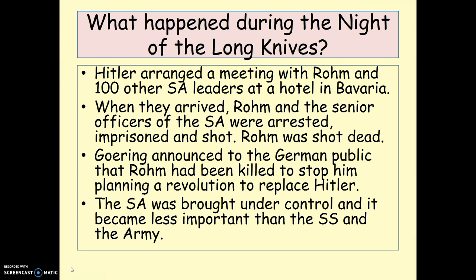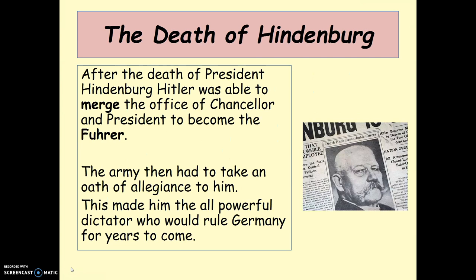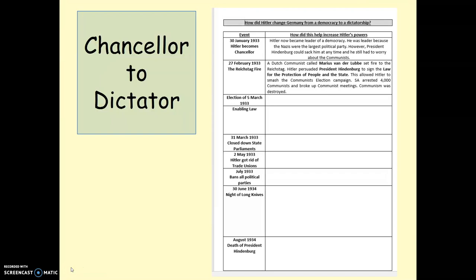The Night of the Long Knives was an absolutely crucial event for Hitler gaining control over his own supporters in the SA. And finally, the death of Hindenburg was a really important factor. Hindenburg died in August 1934 — while some conspiracy theorists think Hitler may have poisoned him, most evidence points to natural causes. Hitler was then able to merge the office of chancellor with that of president to become the Führer. He got the army to take an oath of allegiance directly to him, making him all powerful — with the powers of a dictator, the support of the army, and the support of his own people, he was the undisputed leader of Germany.